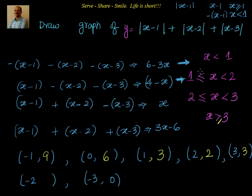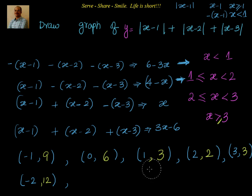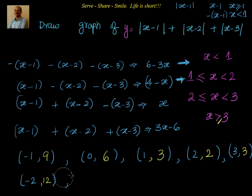At x = -2: y = 6 minus 3(-2) = 6 plus 6 = 12. We won't need x = -3. So our key points are: x = -2 gives y = 12, x = -1 gives y = 9, x = 0 gives y = 6, x = 1 gives y = 3, x = 2 gives y = 2, and x = 3 gives y = 3.